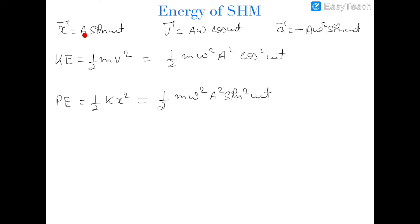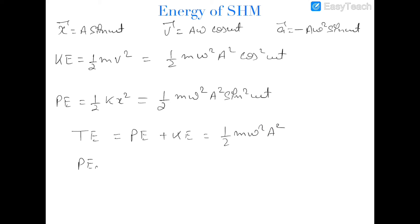The dependency on cos squared theta for kinetic energy and sin squared theta for potential energy depends on the assumed displacement equation — if you assumed x as a cosine, these would swap. The total energy of SHM is potential energy plus kinetic energy, which equals half m omega squared a squared times (cos squared plus sin squared), equal to 1. So total energy is half m omega squared a squared. The maximum potential energy equals the total energy, which also equals the maximum kinetic energy: half m omega squared a squared.